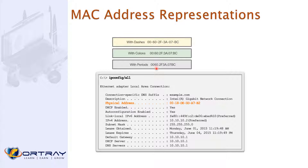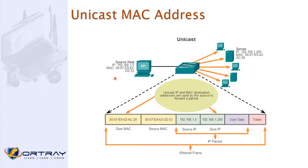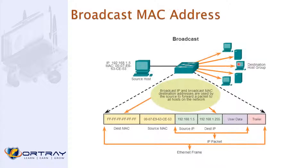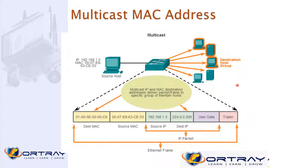A unicast MAC address is when the IP address maps to just one MAC address. A broadcast MAC address is FF:FF:FF:FF:FF:FF, which goes to all devices on the network. A multicast MAC address is a special number that is sent only to a specific group of devices.